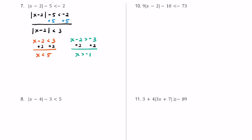Because we had a less than symbol at the beginning, we can rewrite this as one joint compound inequality: negative 1 is less than x, which is less than 5. On the graph, we have negative 1, 0, and 5 marked. We use open circles since the endpoints can't be included. Anything between negative 1 and 5 will be solutions, excluding negative 1 and 5 themselves.